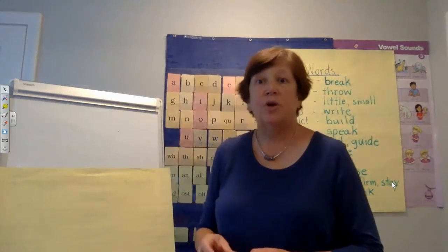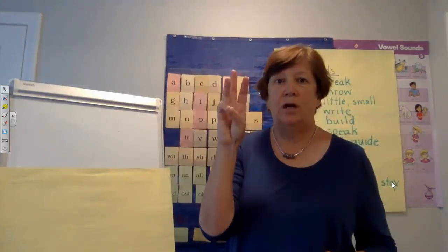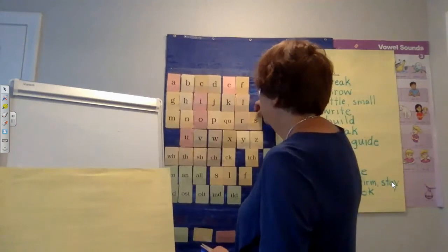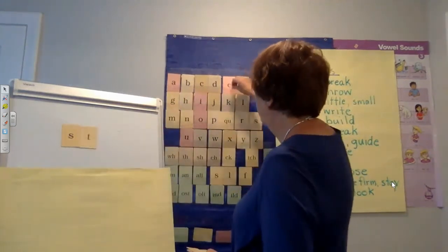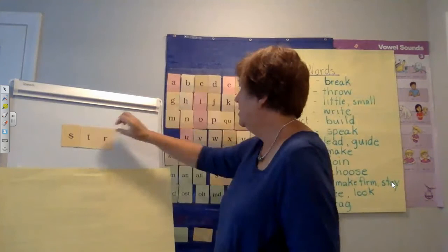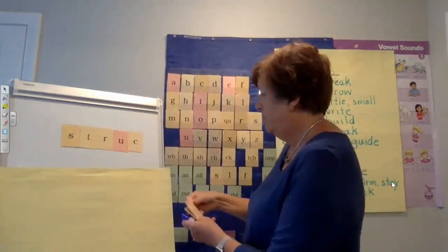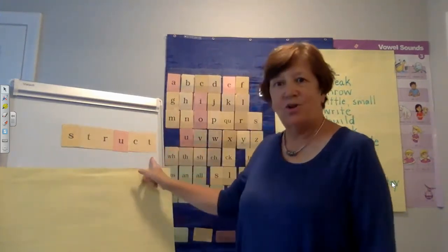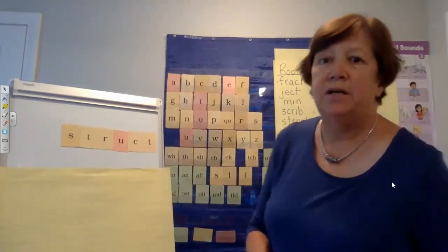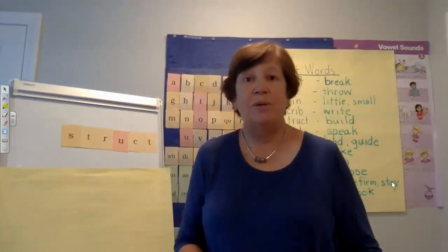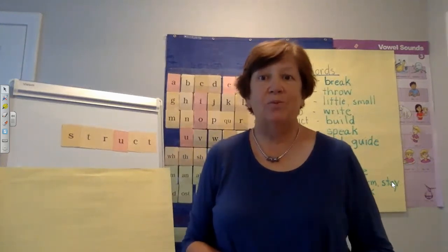Let's try one more: struct. Like in construct, destruct. Let's tap it — S-T-R-U-C-T. We need that tricky three-letter blend, and we hear CT, so we spell that with C and then T. Struct — that's a long root. S-T-R-U-C-T. Remember, struct means to build. So just be careful with those blends at the end. When you hear that CT ending, it's going to be spelled with a CT.